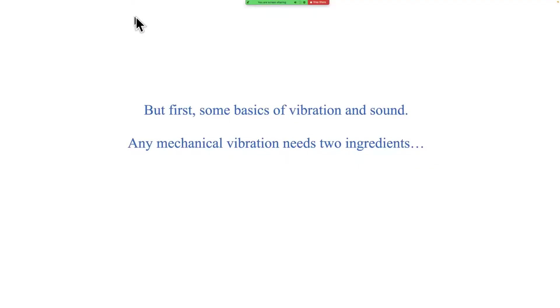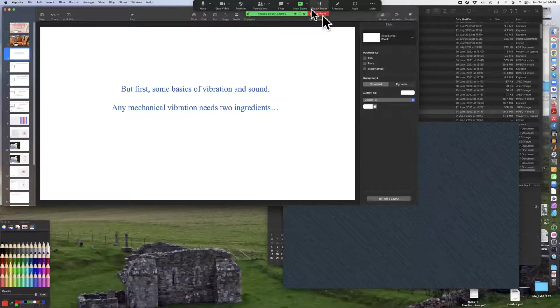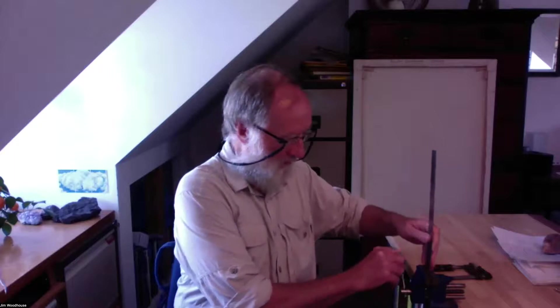We're going to think about what is vibration, what is sound, and start with vibration. Any mechanical vibration requires two ingredients and let me illustrate those for you here. I take this metal ruler and I clamp it in a vice.